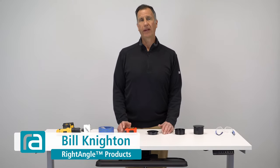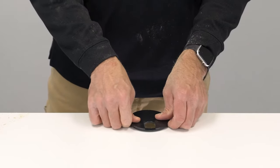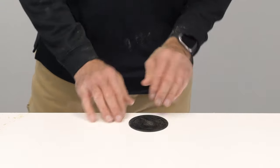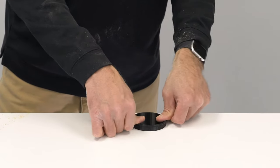Hi, Bill with Right Angle. Do you want to manage your cables and wires through a grommet hole on your work surface? Or maybe you want to install a USB charger or a wireless charger. Maybe you just want a cup holder.